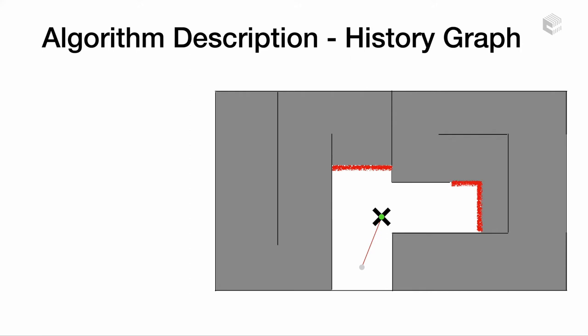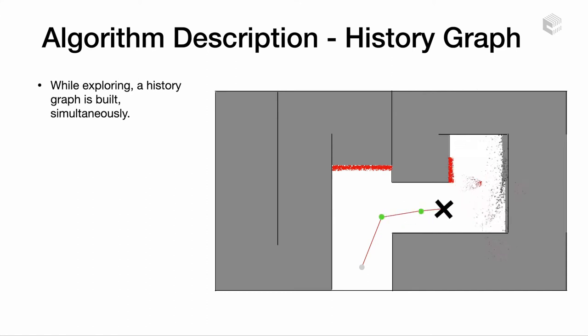The history graph primary usage is the ability to reseed the RRT to find potential regions of exploration faster. After iterative process of the exploration algorithm, the map may look like this.